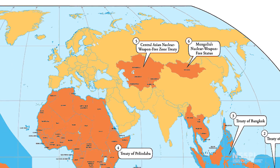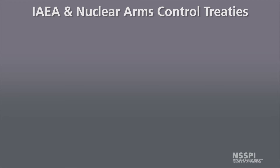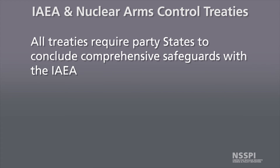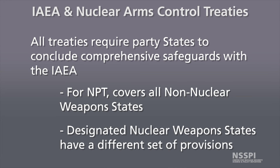Part of all of these treaties — the NPT and the Nuclear Weapons Free Zone treaties — is that all the treaties require party states to conclude comprehensive safeguards agreements with the IAEA. For the NPT, that covers the non-nuclear weapon states. The nuclear weapons possessing states, which are codified within the treaty itself, have a different set of provisions. But all non-nuclear weapon states under the NPT and all member states to the Nuclear Weapons Free Zone treaties are required to conclude comprehensive safeguards agreements with the IAEA.